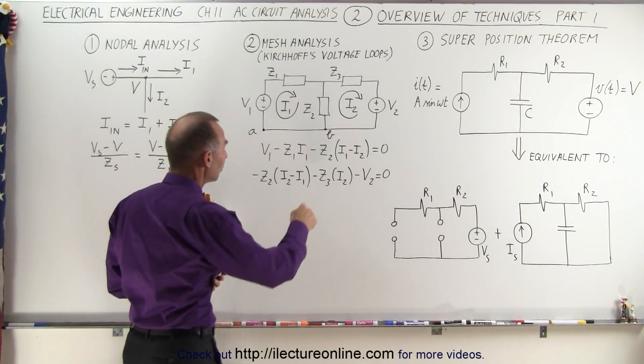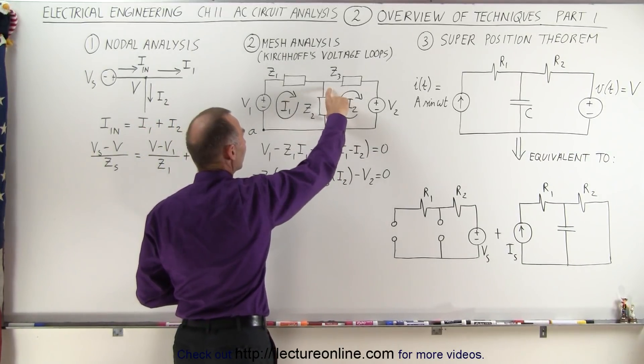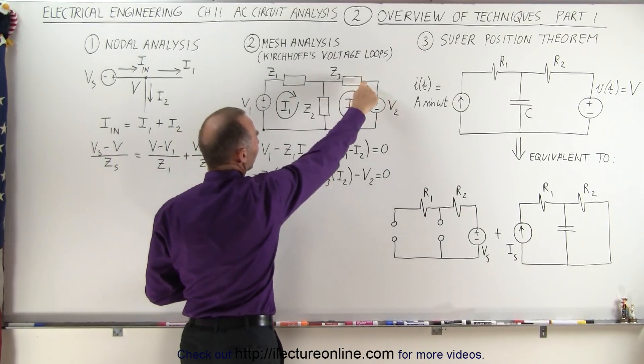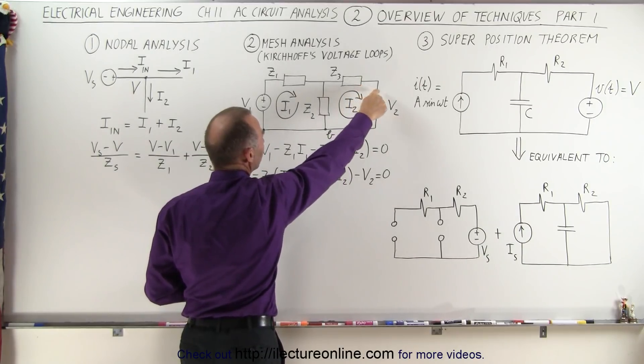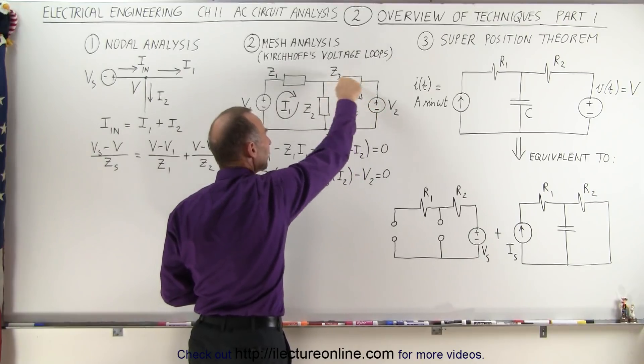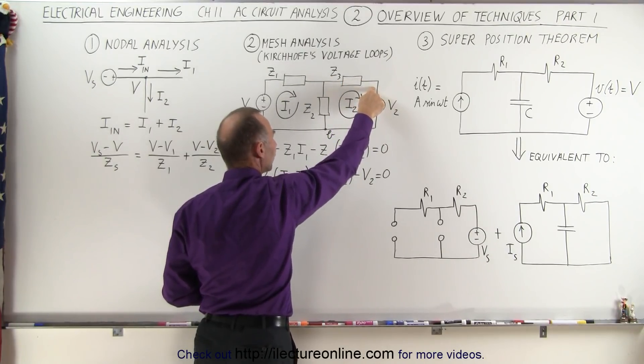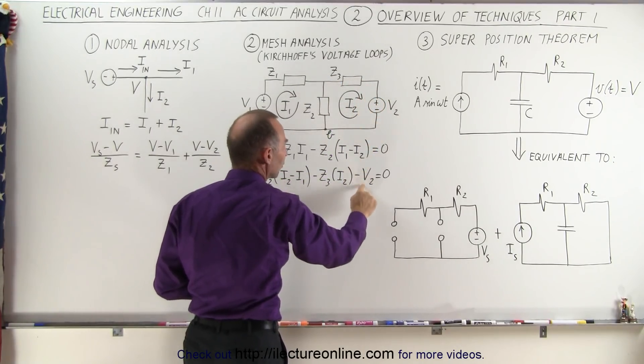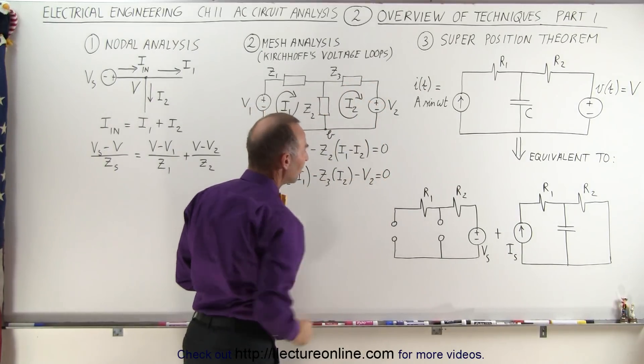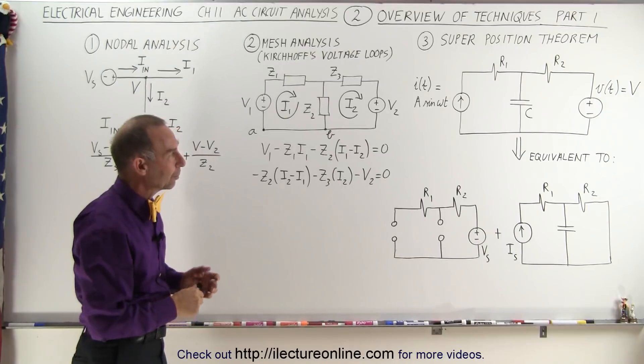Then we do the same for the second loop starting at B, going across this impedance. We have a voltage drop because of I2 and a voltage rise because of I1. Then we have a voltage drop across Z3 and a voltage drop across the voltage source, because we're going around the mesh from the positive end to the negative end. When we go around the mesh, we add up all the voltages and they add up to zero.